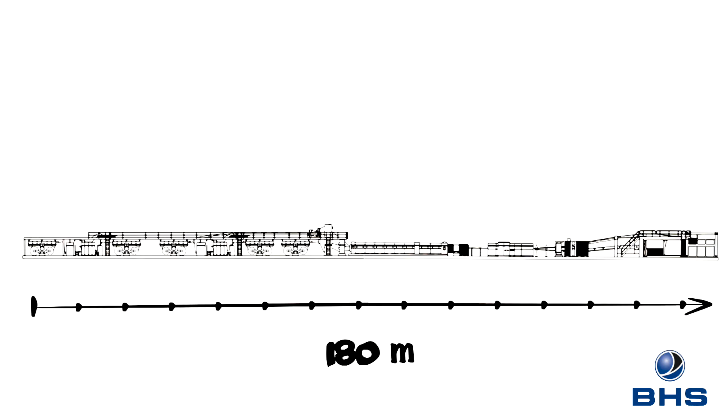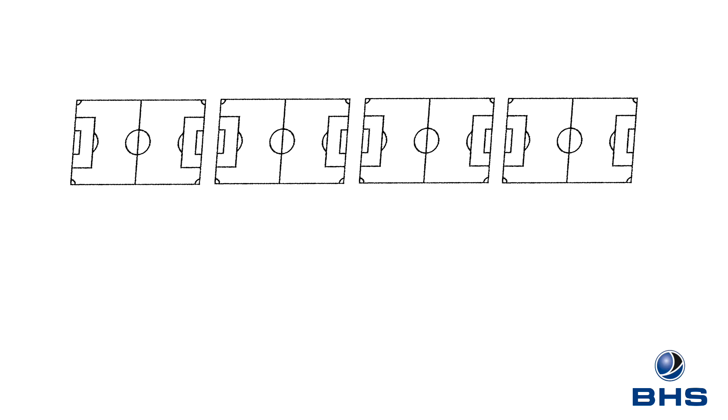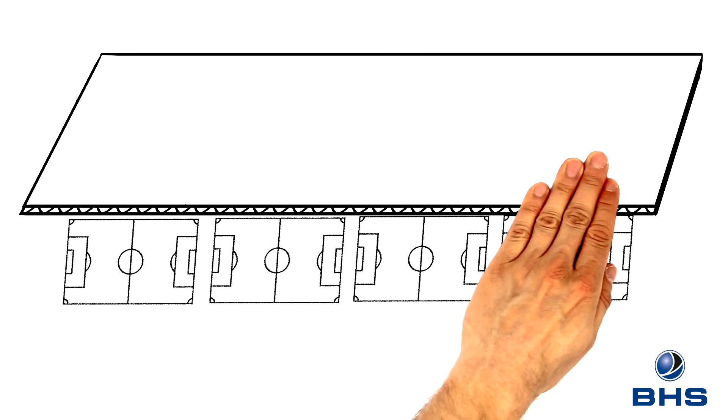Such a corrugator can be up to 180 meters long. Depending on their structure, the processed papers may be up to 3.35 meters wide. Modern corrugators run at an average speed of 250 meters per minute, and maximum production speeds run at up to 450 meters per minute. Even with a corrugator producing at 250 meters per minute, in just one hour eight football fields could be covered with corrugated board.